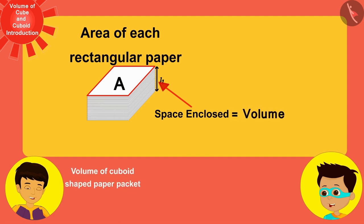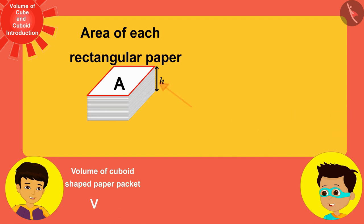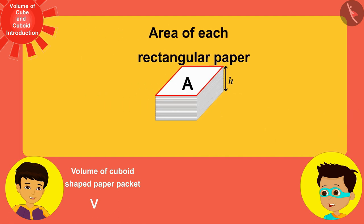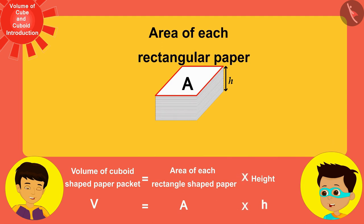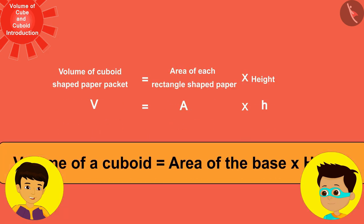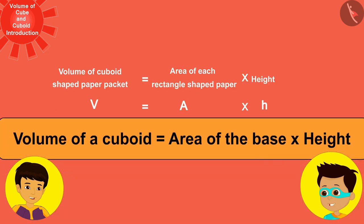You can see that this volume is equal to the product of the area of each rectangular paper A and the height of the stack h. This gives us the formula for the volume of any cuboid.